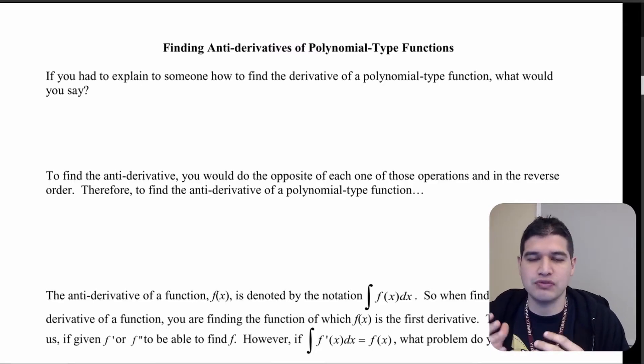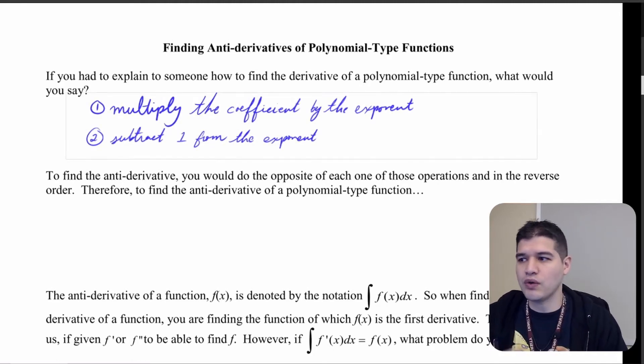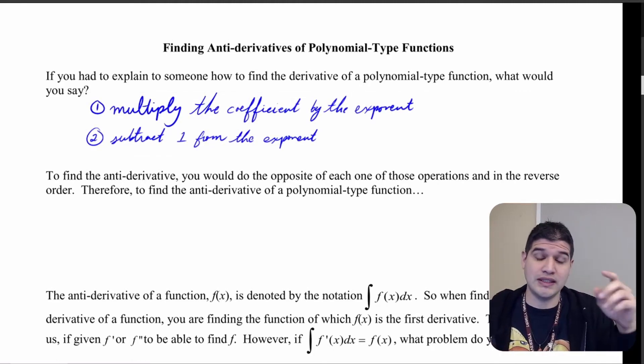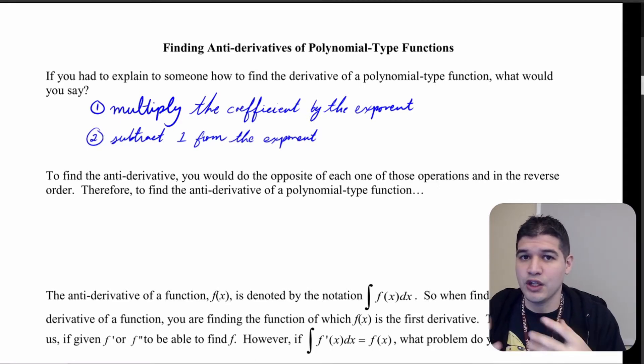If you had to explain to someone brand new to calculus how to find the derivative of a polynomial function like 2x squared, what would you say? You're going to take that exponent, bring it down, multiply it by the coefficient, and then subtract 1 from that exponent. That's it.